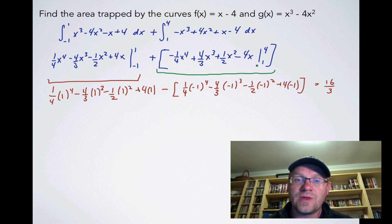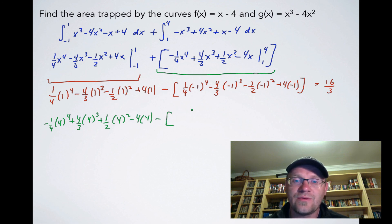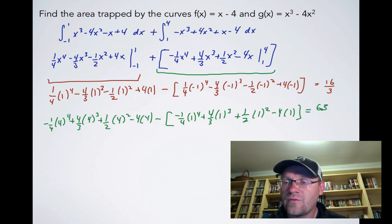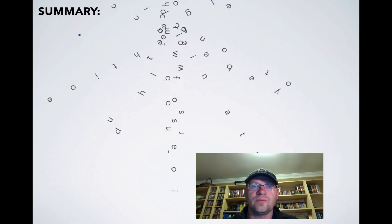After evaluating the first integral from negative one to one, the result is 16 over 3. For the second integral from one to four, substituting x equals 4 and subtracting what we get for x equals 1, the result is 63 over 4. Adding the two areas together: 16 thirds plus 63 fourths gives a final answer of 253 over 12 units squared.